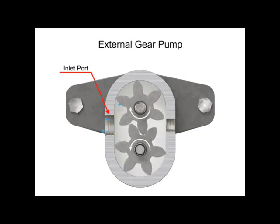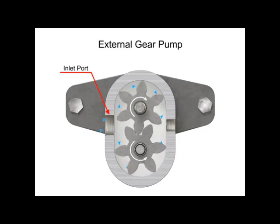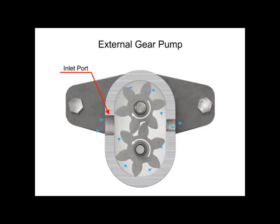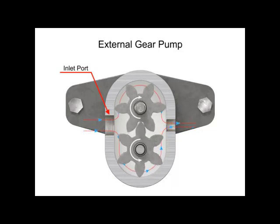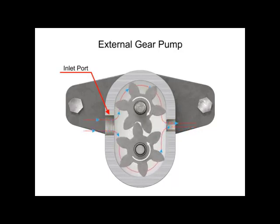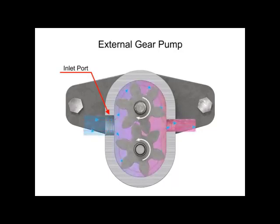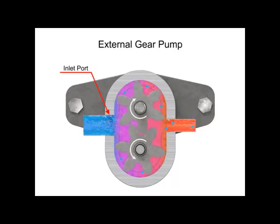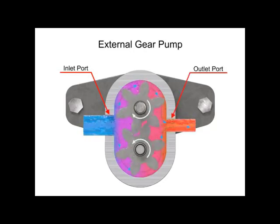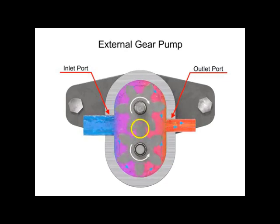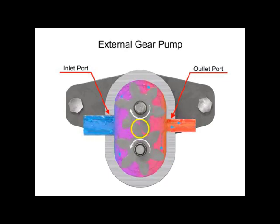Fluid flows into the cavities and is trapped by the gear teeth. As the gears rotate, a flow path is created around the outside of each one. Fluid trapped in the slots between teeth is carried around and discharged into the cavity with the outlet port. Meshing of the teeth in the center of the pump seals the outlet port from the inlet port, and no fluid passes between the gears.